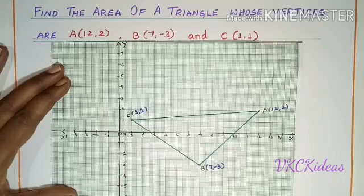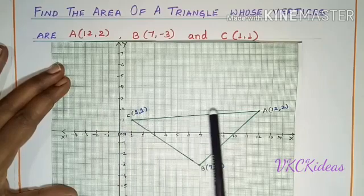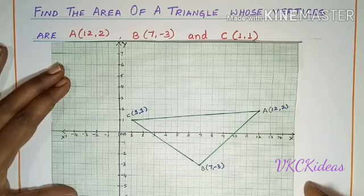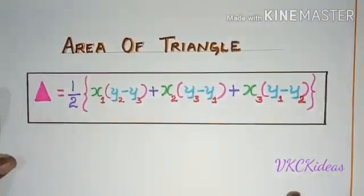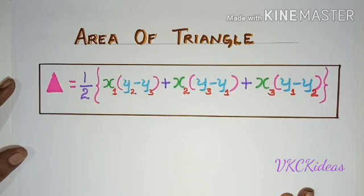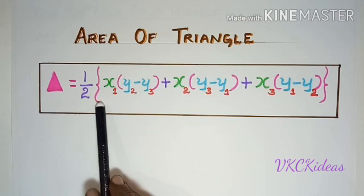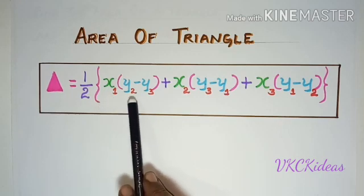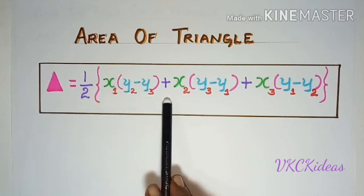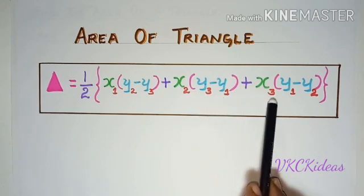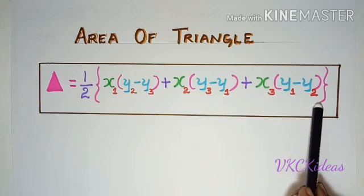In this problem, we are going to find out the area of this triangle ABC using the formula. The formula is like this: Area of triangle equals half into x1(y2 - y3) + x2(y3 - y1) + x3(y1 - y2).